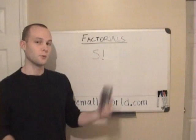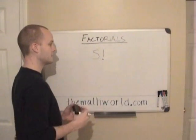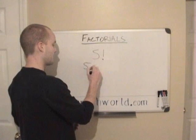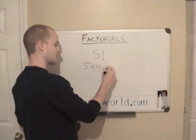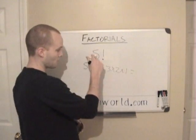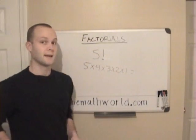You'll see the exclamation point at the end of the number. And what this means is 5 factorial looks like 5 times 4 times 3 times 2 times 1. And you just multiply this number all the way down the line.